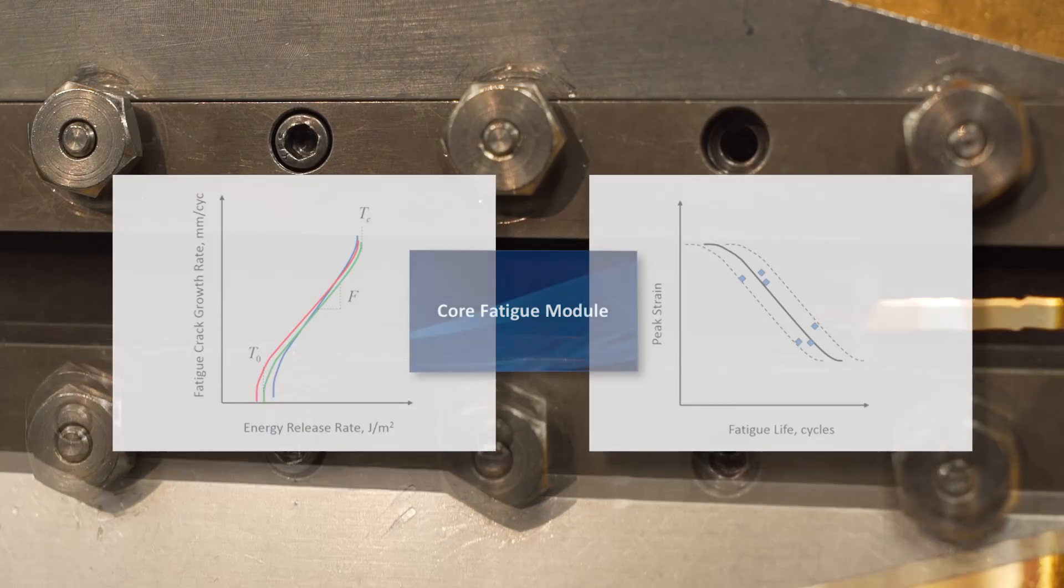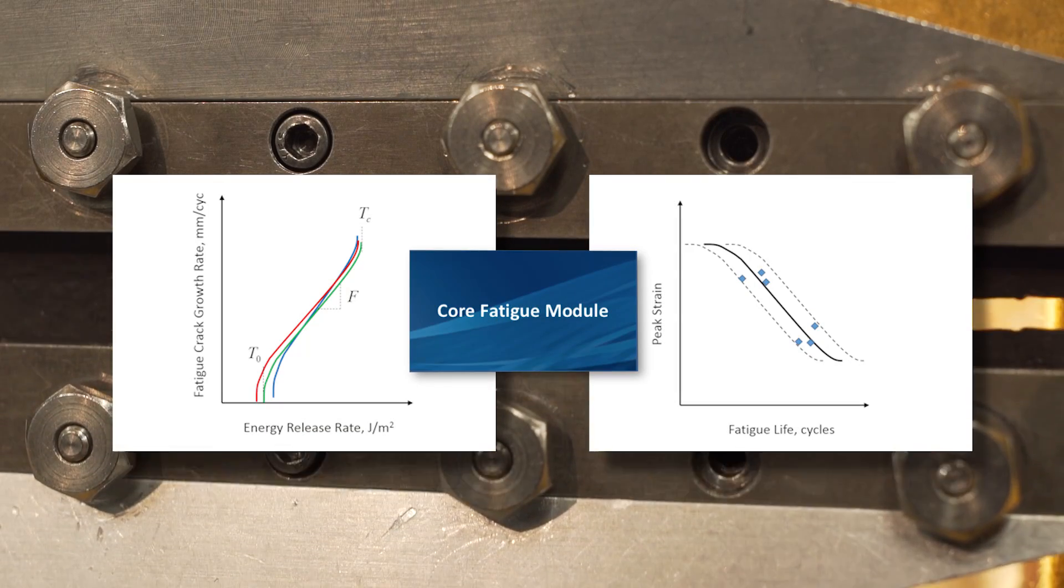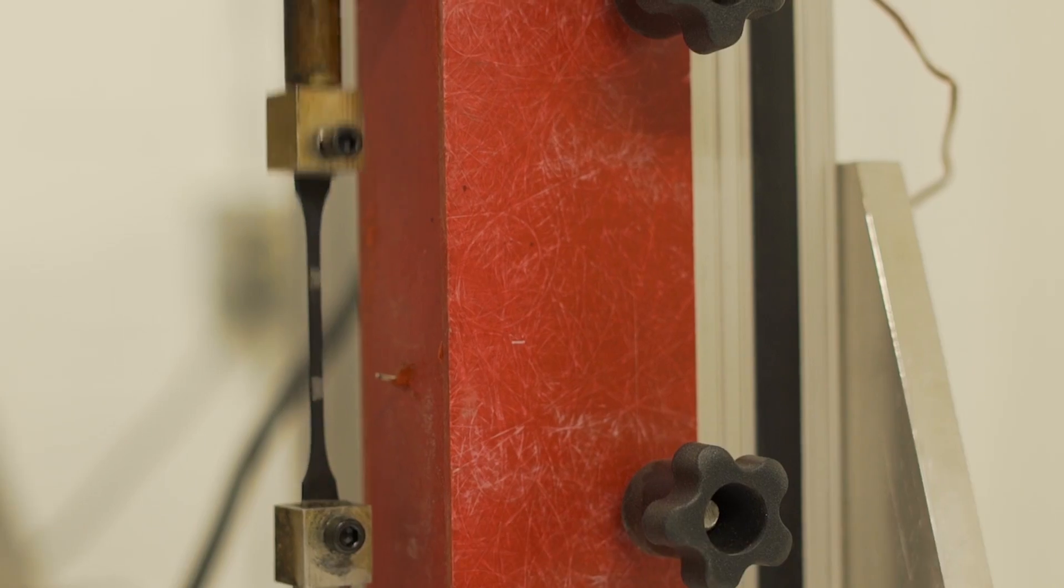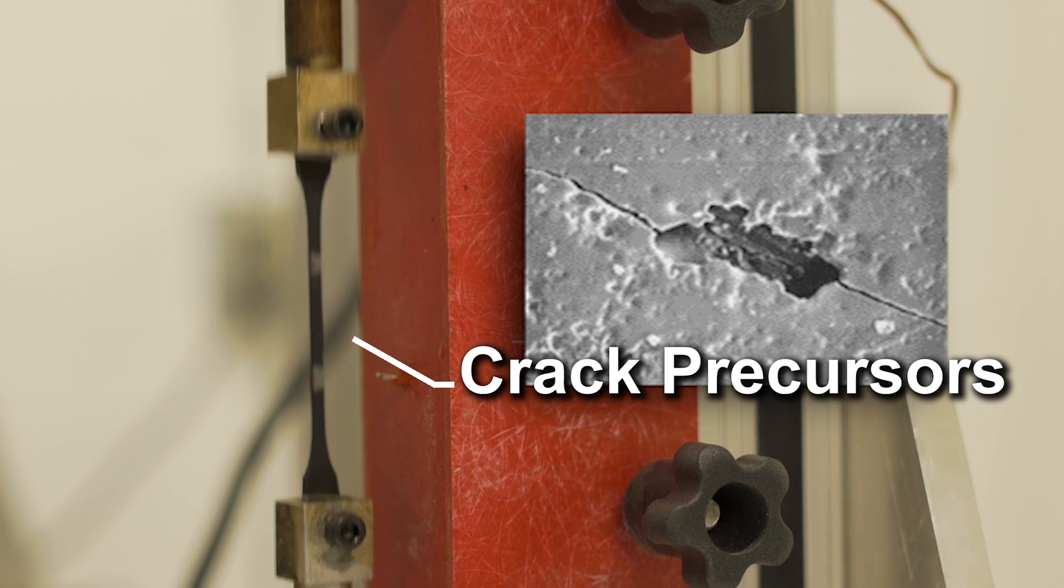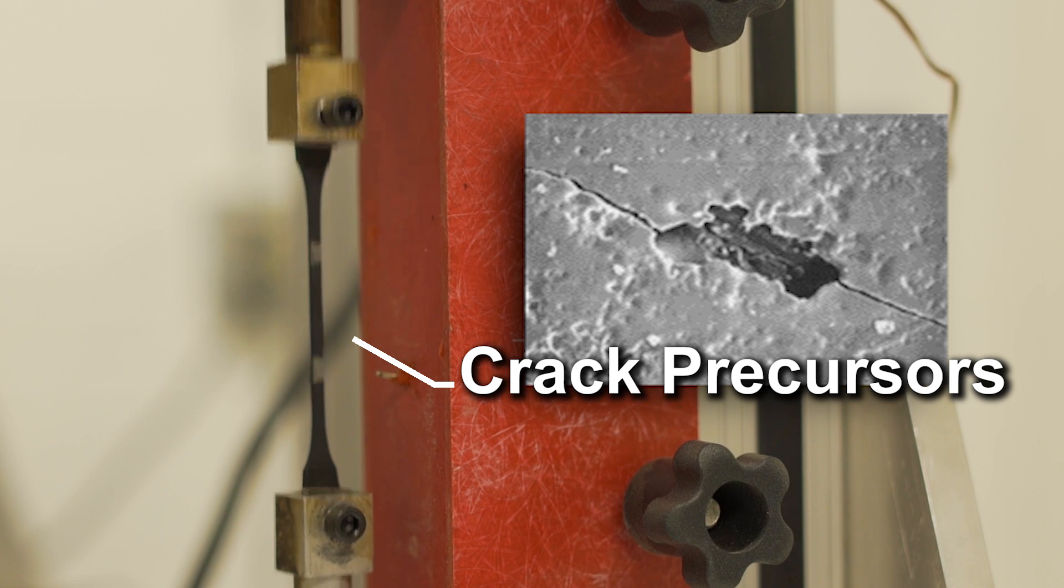Our core module gives you basic fatigue parameters. You get the fatigue crack growth rate curve and the strain life curve. It also tells you the size of crack precursors in your compound's microstructure.